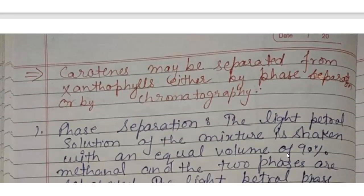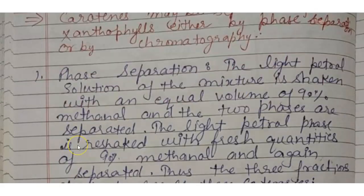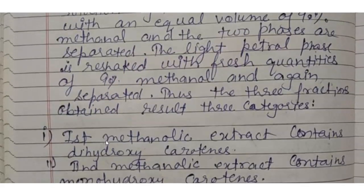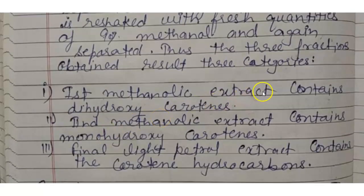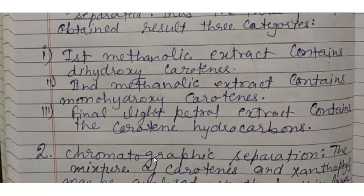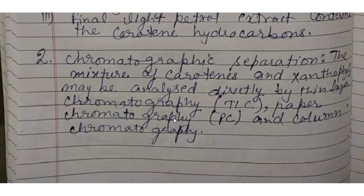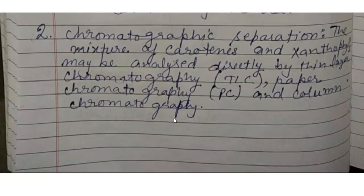Carotenes may be separated from xanthophylls either by phase separation or chromatography. In phase separation, the light petroleum solution of the mixture is shaken with an equal volume of 90% methanol and the two phases are separated; the petroleum phase is re-shaken with fresh 90% methanol. The three fractions obtained are: methanolic extract containing dihydroxycarotenoids; a second methanolic extract containing monohydroxycarotenoids; and the light petroleum extract containing carotene hydrocarbons. For chromatography, the mixture may be analyzed by TLC, vapor chromatography, PC, and column chromatography.